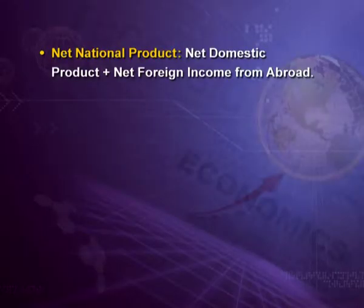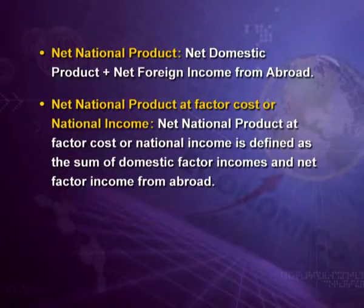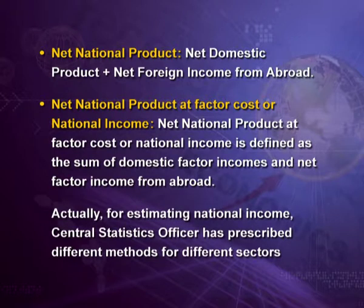The next term is net national product. Net national product is equal to net domestic product plus net foreign income from abroad. The next and last term is net national product at factor cost, or national income. It is defined as the sum of domestic factor incomes and net factor income from abroad. For estimating national income, the Central Statistics Officer has prescribed different methods for different sectors.